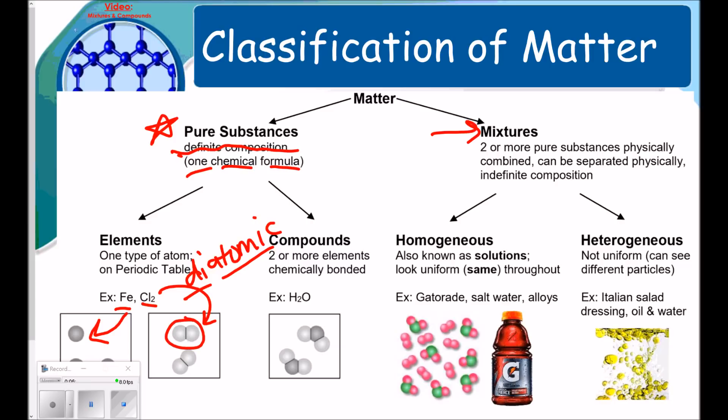Next in our pure substances, we have compounds. There are two or more elements that are chemically bonded to each other. For example, H2O. Two hydrogens, one oxygen. As you can see here in our picture. The darker shaded atom being the oxygen. The two lighter ones being hydrogen. So those are our pure substances.